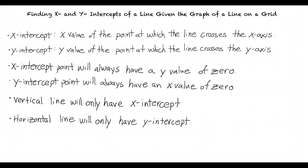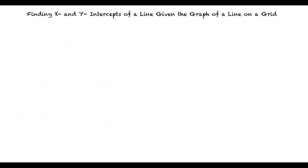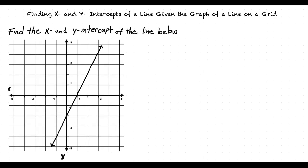Can we try out an example problem? Sure. Here we have a problem asking us to find the x and y intercept of a line with this graph. Let's begin by finding the x intercept. We find the x intercept by looking at the x axis and finding the point at which the line crosses it.